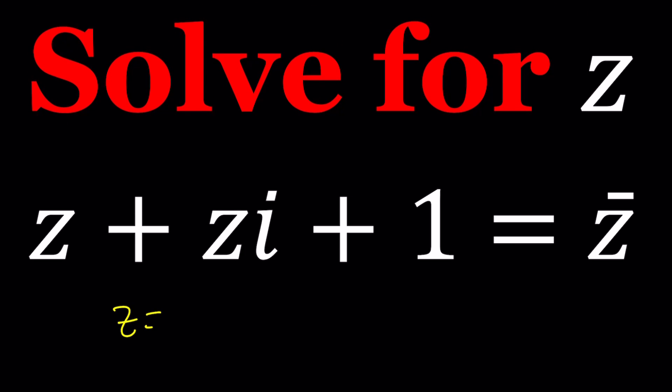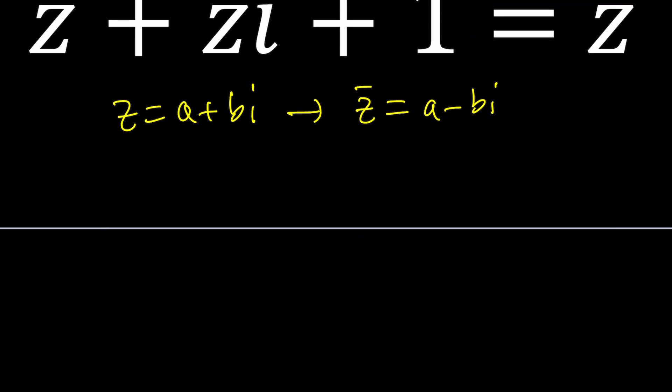So z can be written as a plus bi in standard form. In that case, z bar would be the complex conjugate, which can be defined as the complex number that multiplies or adds to z and always produces a real answer. And that's unique, and that will be a minus bi. In other words, you just change the imaginary part. If you multiply these, notice that you get a squared plus b squared, which is real.